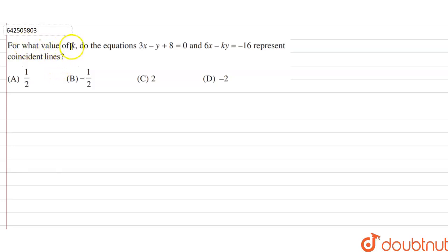Hi students, our question is for what value of k do the equations 3x minus y plus 8 equals 0 and 6x minus ky equals minus 16 represent coincident lines?